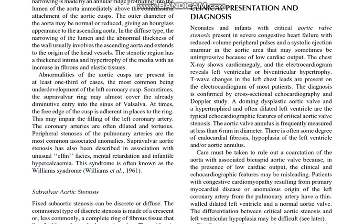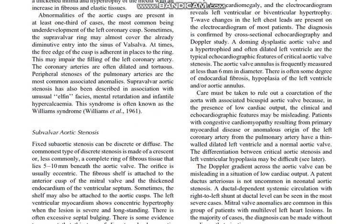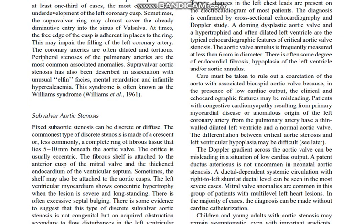Fixed subaortic stenosis can be discrete or diffuse. The common type of discrete stenosis is made of a crescent, or less commonly, a complete ring of fibrous tissue that lies 5–10 mm beneath the aortic valve; the orifice is usually eccentric. The fibrous shelf is attached to the anterior cusp of the mitral valve and the septal endocardium of the ventricular septum.